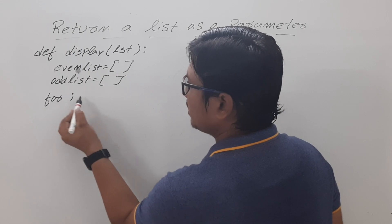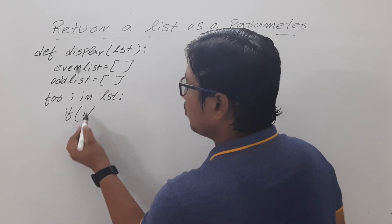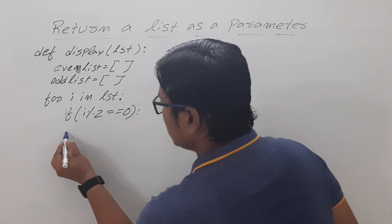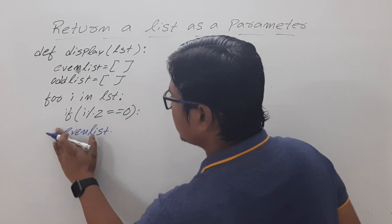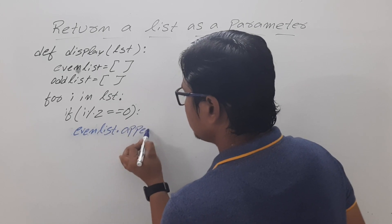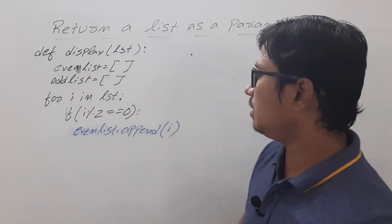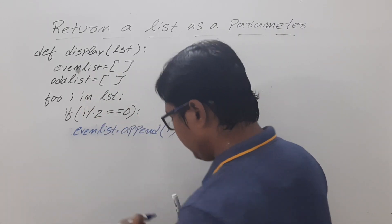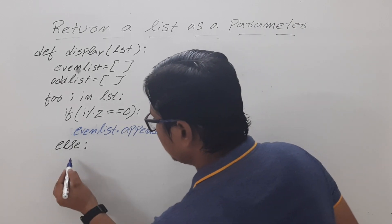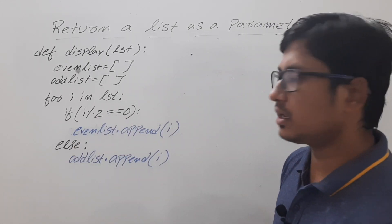Then I will write a for loop: for i in LST. Now I will verify if i modulus 2 is equal to 0 - meaning it is an even number. In that case I will call even list dot append and append i to the even list. Else if it is an odd number, I will append i to the odd list: odd list dot append i.